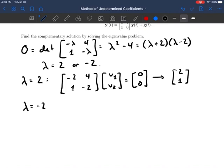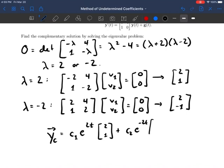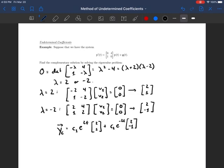Okay, so that's that. Then we do the same thing for lambda equals minus 2. Now our matrix will be [2, 4; 1, 2], because we're subtracting negative 2 from the diagonal, times [v1; v2] equals [0; 0]. And from there, again, we can see pretty quickly that, for example, [2; -1] would work. And that's all that we need in order to form our complementary solution. So now we know that yc equals c1 e^(2t) [2; 1] plus c2 e^(-2t) [2; -1]. So complementary solution obtained, that is half the battle, in some sense, for finding solution to a non-homogeneous linear equation.